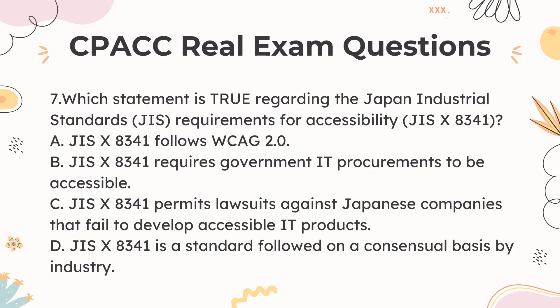7. Which statement is true regarding the Japan Industrial Standards JIS X 8341? a. JIS X 8341 follows WCAG 2.0 b. JIS X 8341 requires government IT procurements to be accessible c. JIS X 8341 permits lawsuits against Japanese companies that fail to develop accessible IT products d. JIS X 8341 is a standard followed on a consensual basis by industry